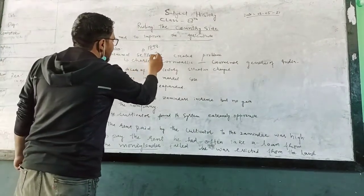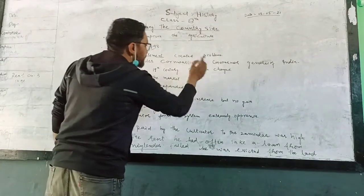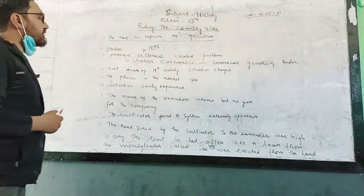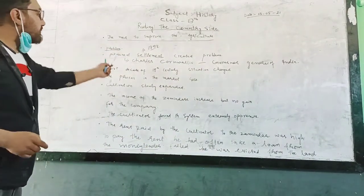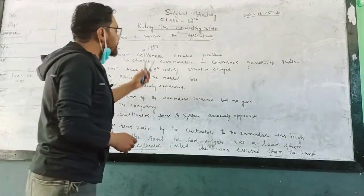This is the Permanent Settlement, which was introduced by Charles Cornwallis, who was the Governor General of India. In 1793, this is the Permanent Settlement which was introduced.